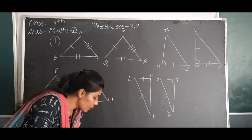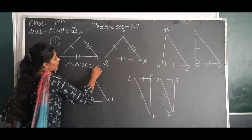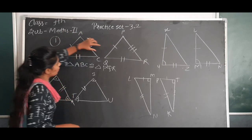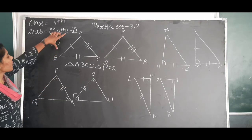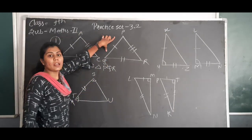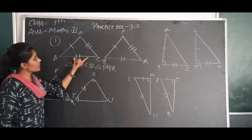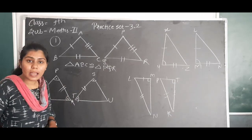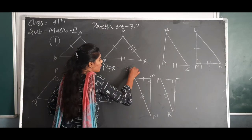In the first diagram, triangle ABC is congruent to triangle PQR. Segment AB is congruent to segment PQ, segment AC is congruent to segment PR, and segment BC is congruent to segment QR. All three sides are congruent. So triangle ABC is congruent to triangle PQR by SSS.